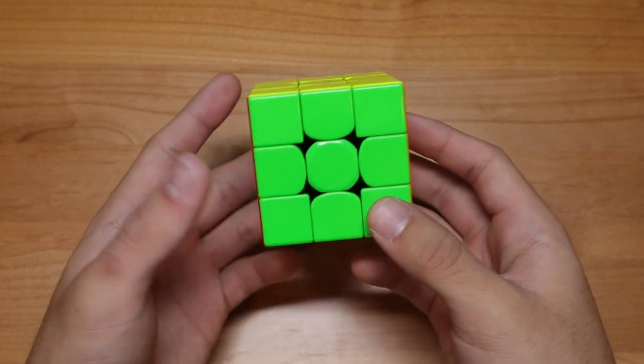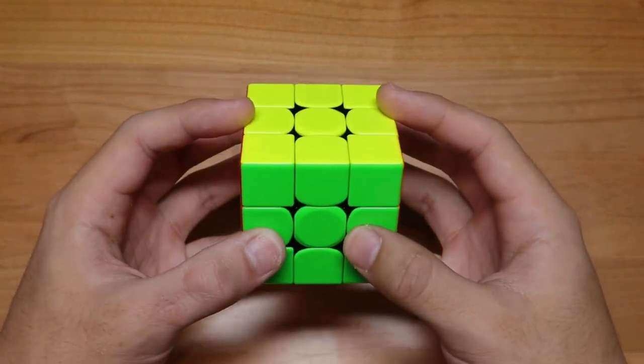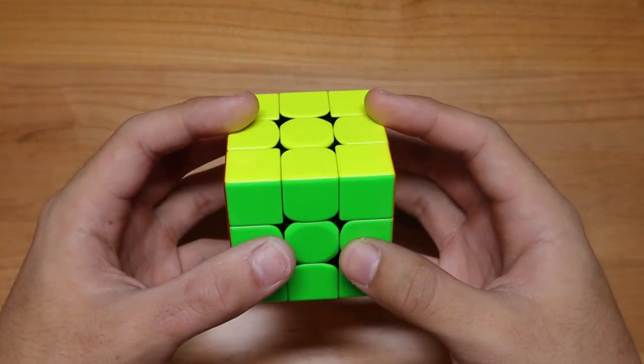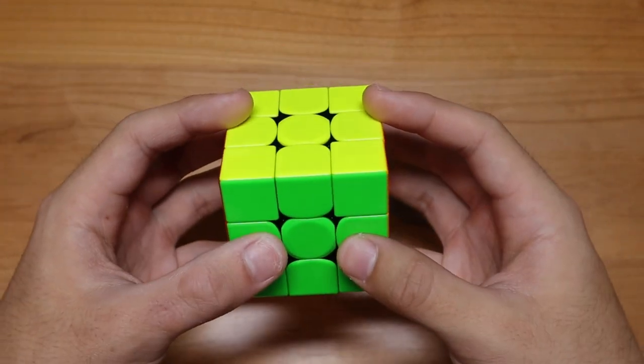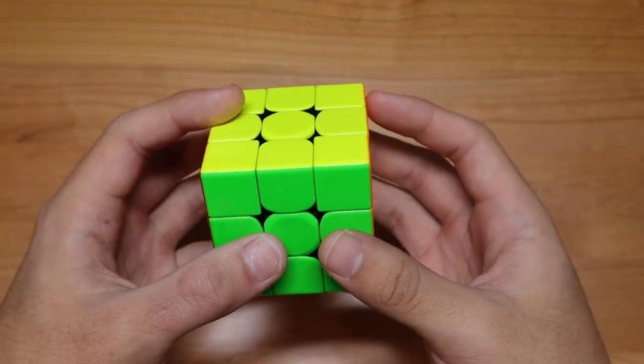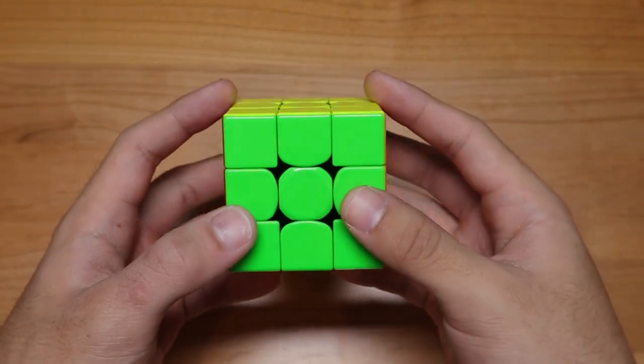This method of improving your look ahead helps with tracking multiple pieces in your head which would apply to real world solving with absolutely zero compromises to other essential speedcubing skills like your TPS. Soon, you won't even have to think about the pieces you are solving that you planned during your inspection, and instead you are able to focus on finding and tracking pieces for the next steps in a normal solve.